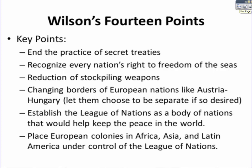After the war, Woodrow Wilson proposes the 14 Points of Peace. This is one of the biggest things he is remembered for as President of the United States. He wants to end the practice of secret treaties — nations signing treaties with each other must make them public. He wants every nation's right to freedom of the seas to be recognized, which would prevent things like unrestricted submarine warfare. He also wants to reduce the stockpiling of weapons, and wants border changes to nations like Austria-Hungary, such as letting Austria and Hungary be separate nations if they so desired.